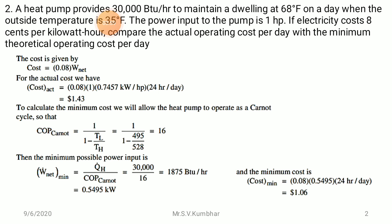After converting temperatures to Kelvin, the COP of the Carnot cycle comes to be 16. The minimum possible power input is: W_net = QH upon COP of Carnot cycle, which is 30,000 divided by 16.